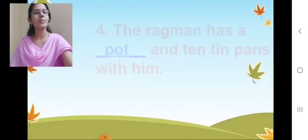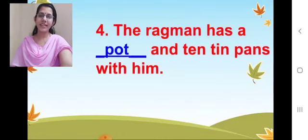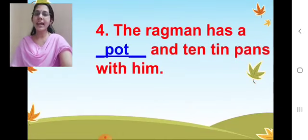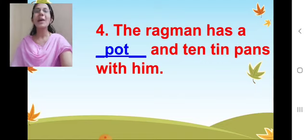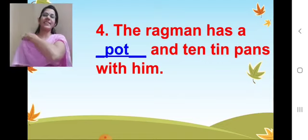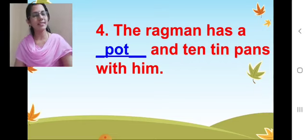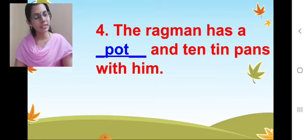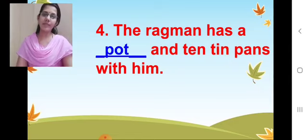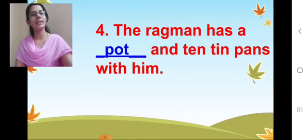Now comes our fourth one. 'The ragman has a ___ and ten tin pans with him.' Pot — very good. Write pot in the dash. Done? Excellent. P-O-T, pot. See how I have written it here. Very good.